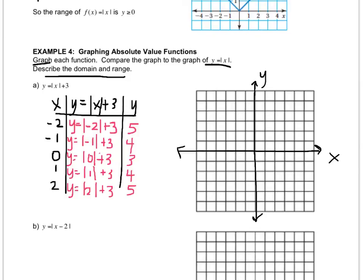Okay, so I'm going to graph the point negative 2, 5, negative 1, 4, 0, 3, 1, 4, 2, 5. And you want to extend your graph because if you used more points, you would have that graph, and then put the equation on the graph.